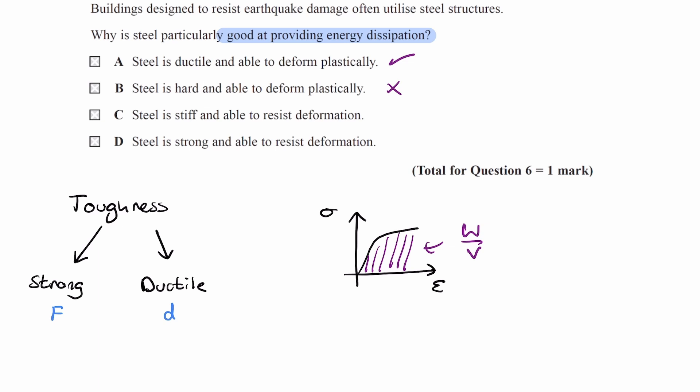Option C, steel is stiff and able to resist deformation. We don't want it to resist deformation, so it can't be C, and that's also why it can't be D. It says steel is strong, which is correct, but it says able to resist deformation, and therefore it can't be D. It must be A.